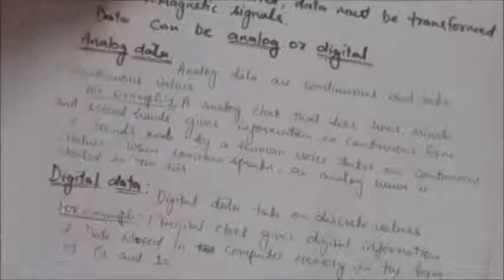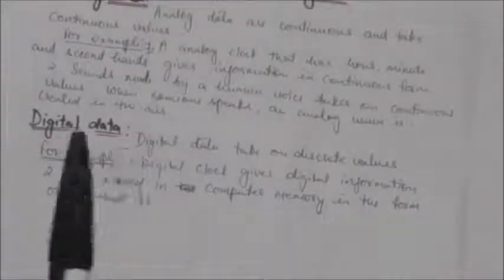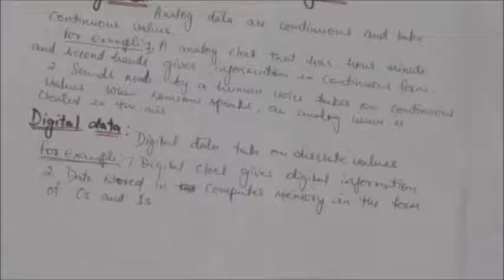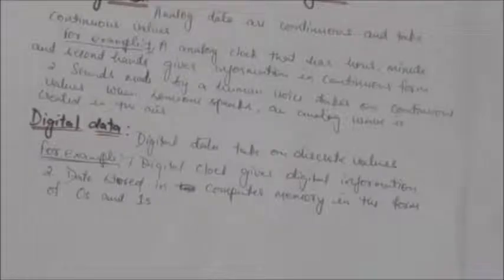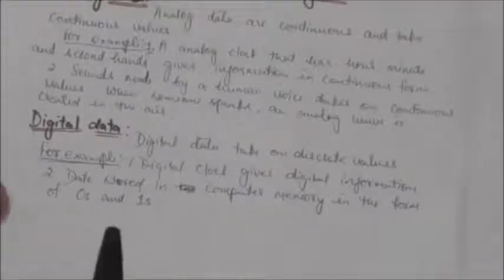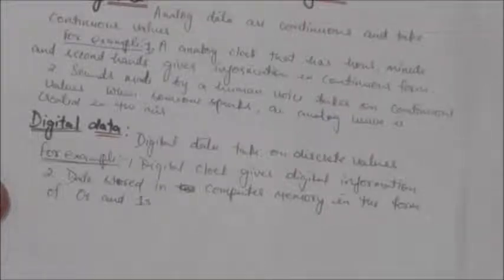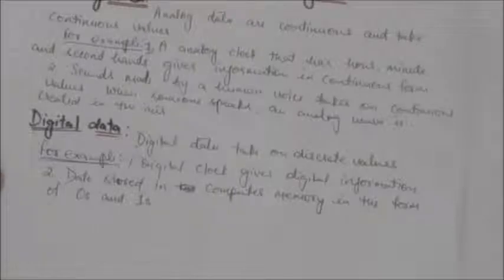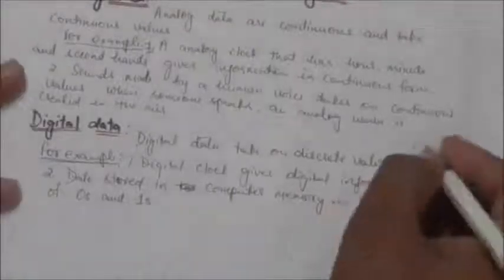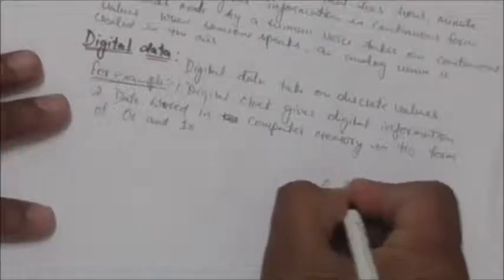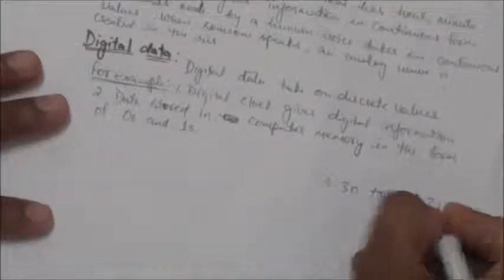Now we will study about digital data. Digital data refers to information that has discrete states — digital data takes on discrete values. For example, a digital clock does not give continuous information; it gives digital information. A digital clock which reports minutes and hours will suddenly change from 6:30 to 6:31, so it doesn't give continuous information.